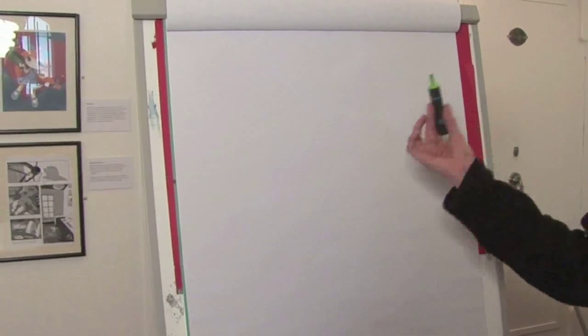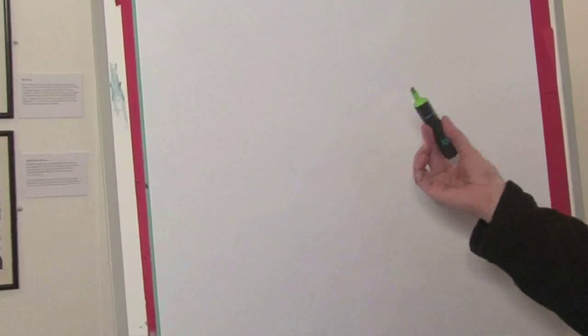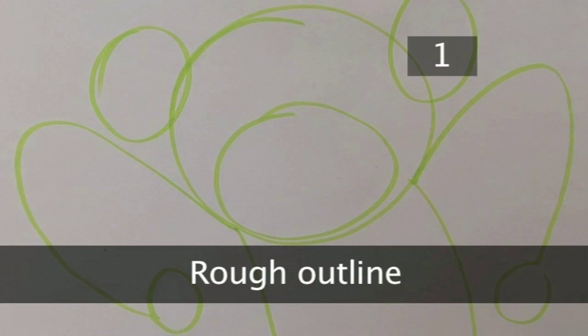Do everything with a pencil first so you can rub it out if you make a mistake. We're going to use a green pen so you can see it on the page. Step 1: Rough Outline.